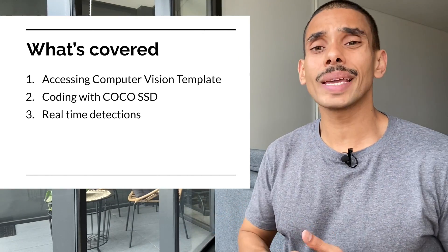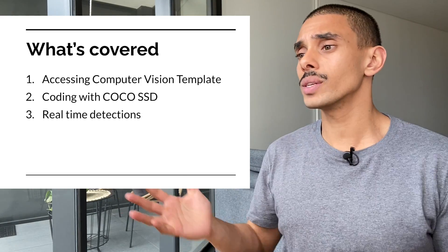What's happening guys? In today's video we're going to be building our very own real-time object detection app. We're going to be using React.js and TensorFlow.js to do this, and in order to speed us along the way, we're going to be taking a look at the real-time object detection template that I've set up. In today's video we're going to be covering three key things.